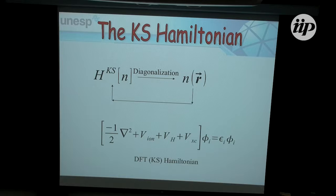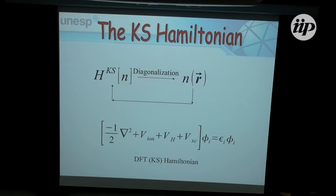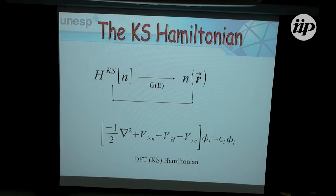In our approach, we don't want to diagonalize the system because we have an open system. Instead, we calculate the Green's function. The retarded, advanced, and lesser Green's functions — the lesser being associated with the non-equilibrium density — allow us to calculate the non-equilibrium density and plug it back into the Hamiltonian for a self-consistent calculation.